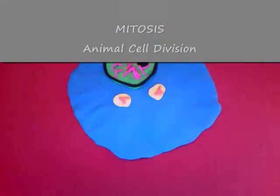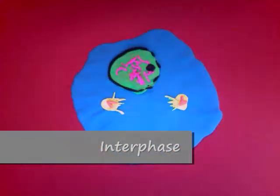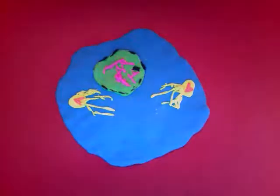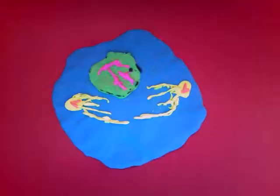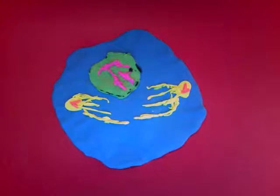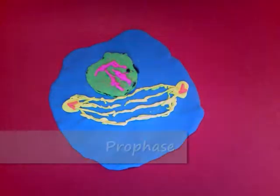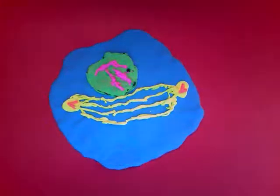Now that we've looked at the division of a gamete, we're going to look at the division of a normal animal cell — mitosis. Moving from G2 of interphase into prophase, the chromatin, which was already duplicated during the S phase, condenses into distinct chromosomes. They appear as identical sister chromatids joined by a centromere. The centrosome, containing a centriole pair, has also duplicated itself, and they begin to move away from each other, forming a mitotic spindle.